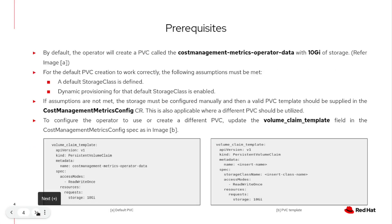Next, let me inform about the storage configuration prerequisite. The cost management metrics operator will attempt to create a default persistent volume claim called the cost management metrics operator data with 10 gigabytes of storage, as shown in image A. For the default PVC creation to work correctly, the following assumptions must be met: first, a default storage class is defined, and second, dynamic provisioning is enabled for that default storage class. If these assumptions are not met, the operator will not deploy correctly.